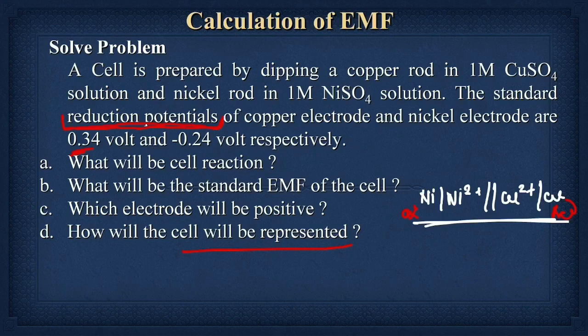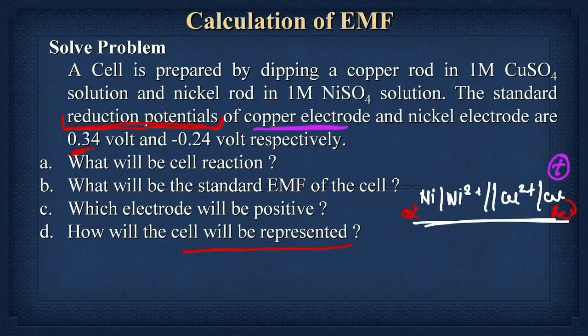We have to calculate the standard EMF. Since reduction potentials are given, we use: E°_cell = E°_reduction (right) − E°_reduction (left) = 0.34 − (−0.24). They also ask which electrode is the positive electrode — on the right-hand side there is reduction, which is the cathode, and the cathode is the positive electrode. So the copper electrode is the positive electrode. Just read the problem carefully and you will get the answer to each question.